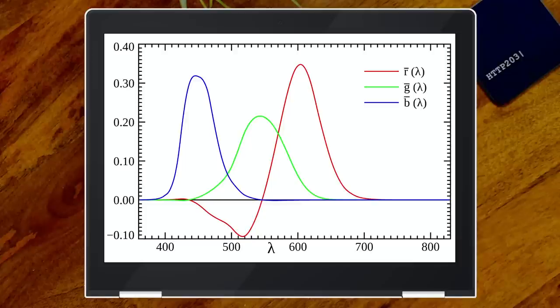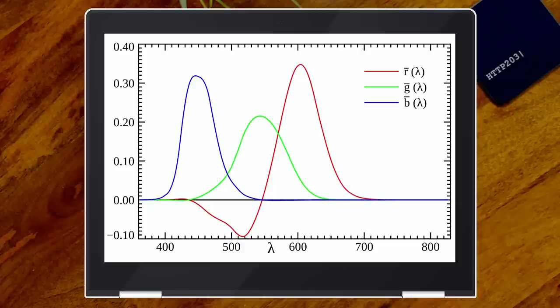Now if any astute observer looks at this graph, they'd say — what does a negative intensity actually mean? Because you can turn a light off or you can turn it on, but what does negative mean? It turns out that for certain wavelengths there was no configuration of the lights to get the exact same color — they could only do that once they added light to the target. Mathematically, some red plus some green plus some blue equals that wavelength, but sometimes they needed to add red to the target value, which is the same as subtracting it from the other side — which is how these negative values came to be.